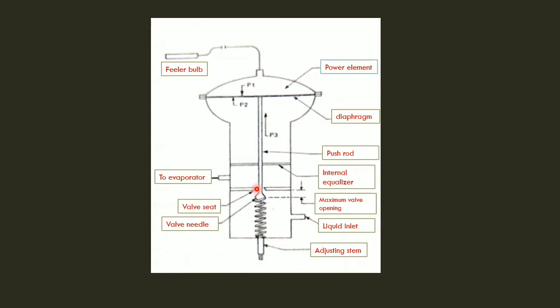We'll compare the automatic expansion valve and thermostat. We'll apply spring pressure to the diaphragm. We have an air temperature moment and a movement. We have a little bit of automatic expansion to get efficiency. We have extra spring pressure, bulb pressure, and evaporator pressure. We have a little bit of accuracy and thermostatization. This is the thermostatic expansion valve, which is a measure of the thermostatic expansion valve.